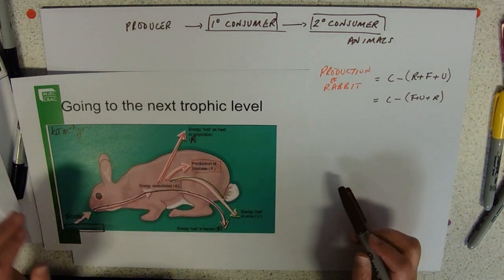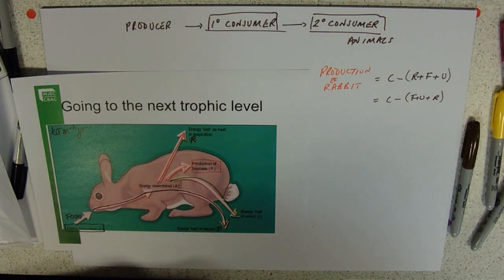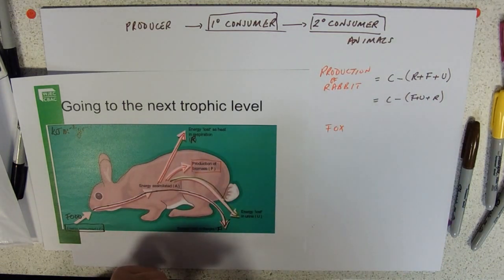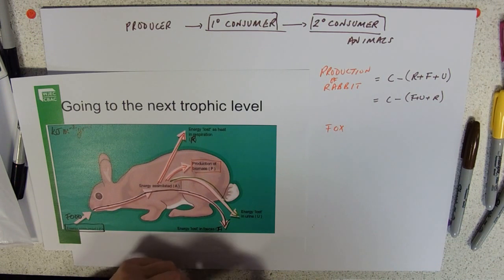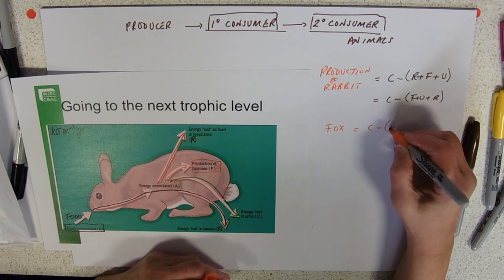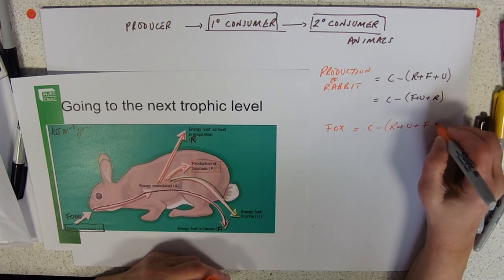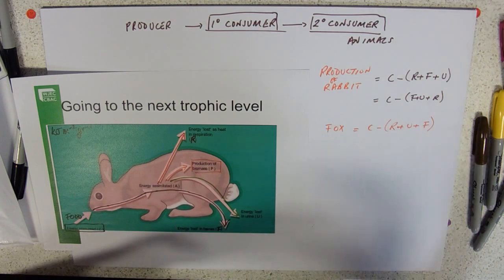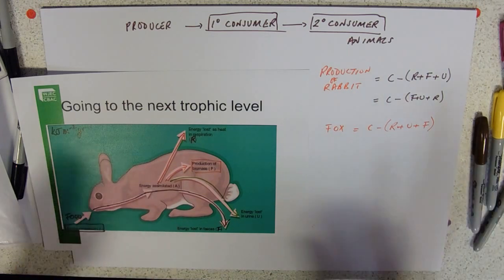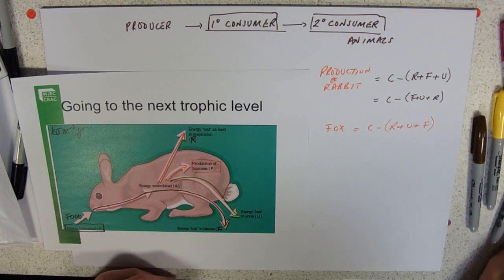That will apply to the secondary consumer. I'm hesitant to use grass-rabbit-fox, but why not. Obviously the fox takes in the production of the rabbit, that's its food consumed, and it also uses it for respiration, urine, and faeces, and then you'll get another production level. This sort of efficiency of production we'll deal with in some calculations.